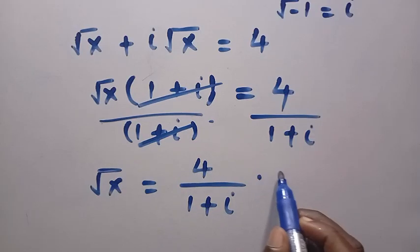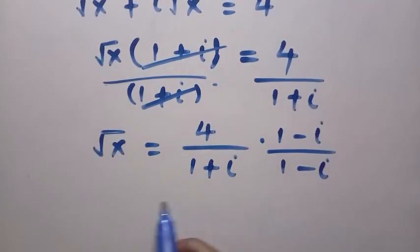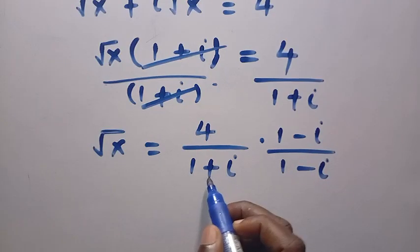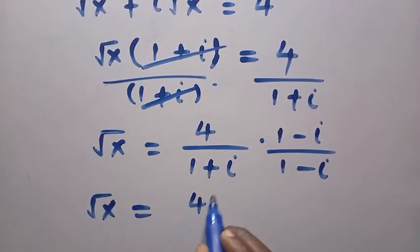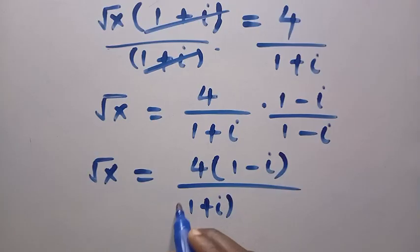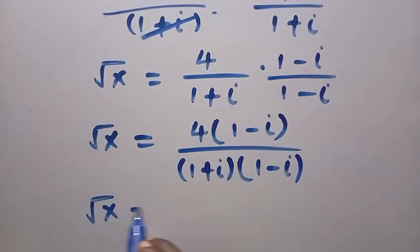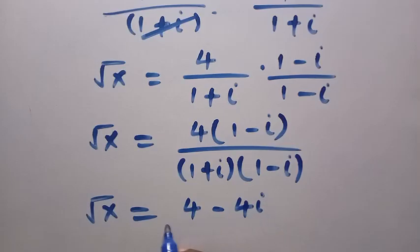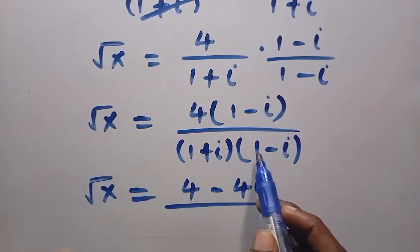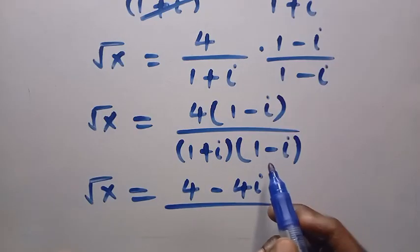We rationalize by multiplying numerator and denominator by (1 - i), to avoid having an imaginary number in the denominator. Rationalizing means we change the sign: positive to negative and negative to positive. So root x equals 4 times (1 - i) divided by (1 + i)(1 - i). These two factors in the denominator differ only in sign.